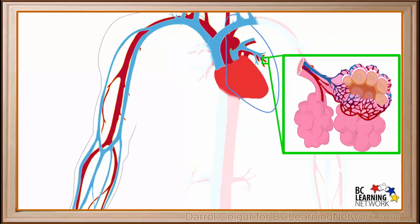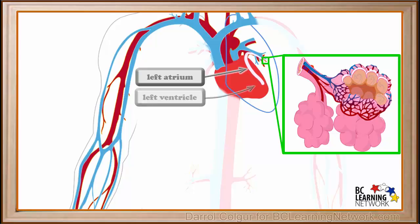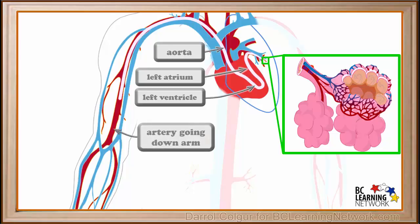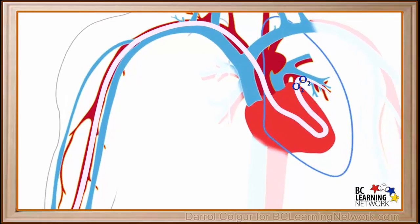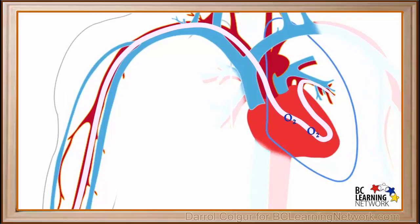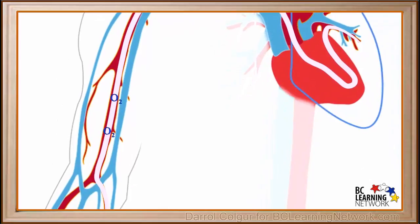Now we'll zoom out from the alveoli to the end of the pulmonary vein in the wider view of the circulatory system, and we'll trace the path oxygen will take through the bloodstream. It passes through the pulmonary vein into the left atrium of the heart, then into the left ventricle, where it is pumped into the aorta, and moves down the artery of the arm until it reaches the muscle in the arm we first talked about.